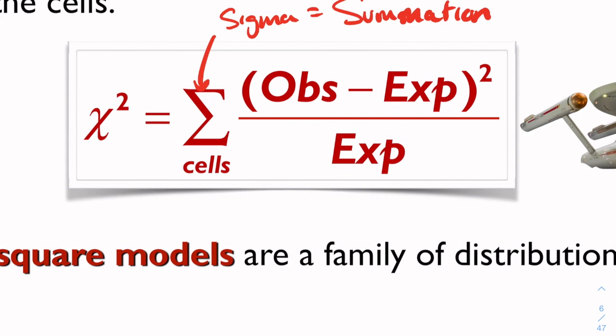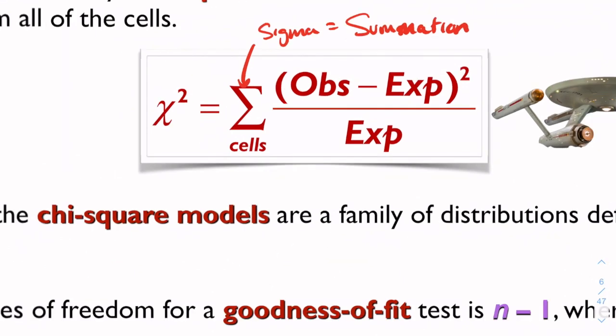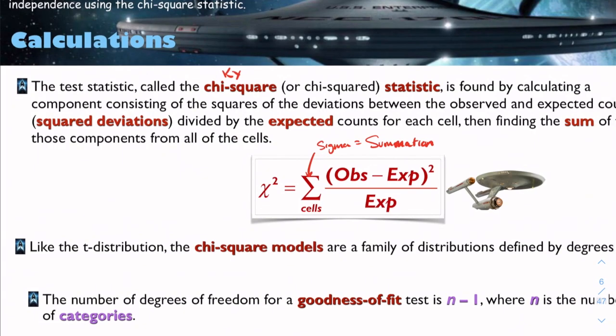We've seen that before this year. If not, you've seen that in another math class. So we take each observed minus the expected value, square it, divide it by the expected value. We add all those up, and that's what chi-squared is.